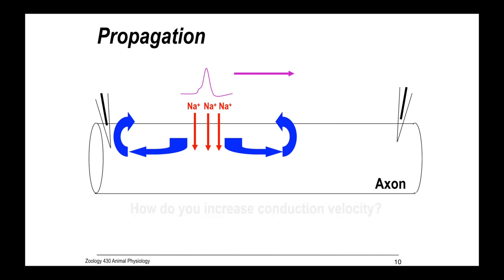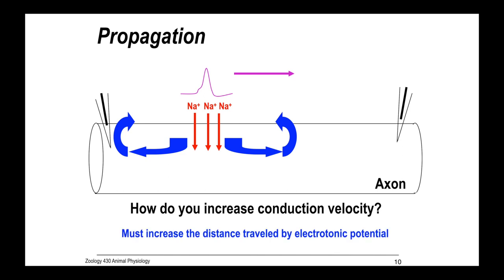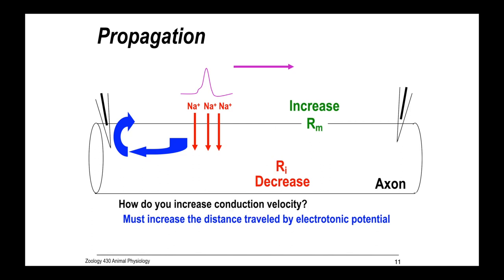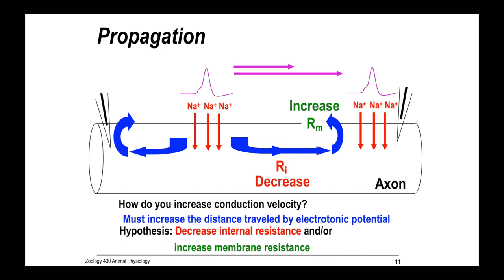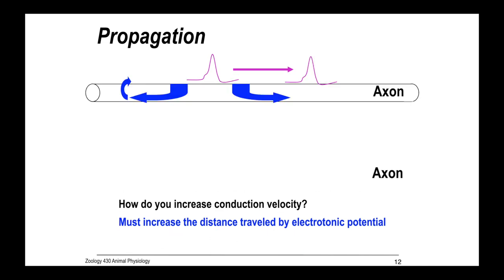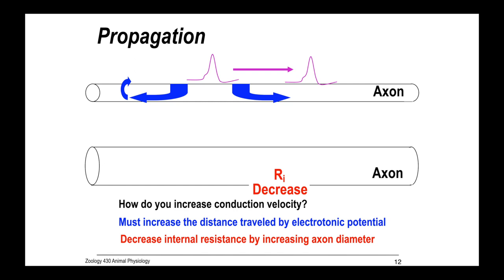But how do we increase conduction velocity? We have to increase the distance traveled per unit time. One way is to reduce the internal resistance, or perhaps to increase the external or membrane resistance. So the hypothesis is, do these same mechanisms work for action potentials too?